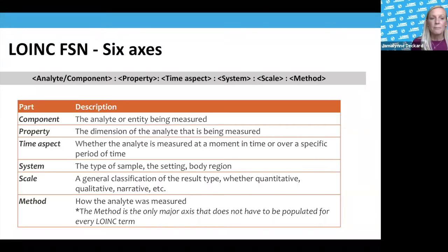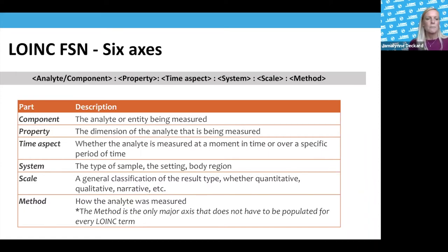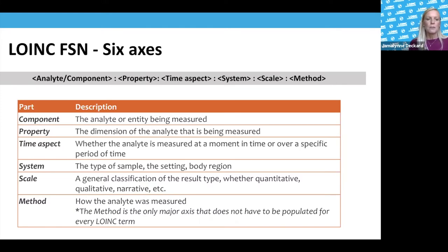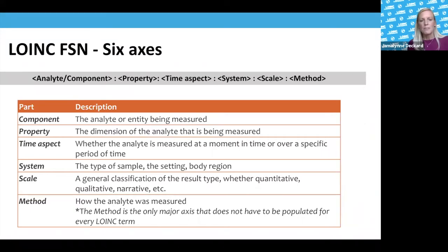Then we have the time — the timing aspect for the measurement — the system, which is the specimen or setting or body region, the scale that is a general representation of the result type, and then the method. The method is the only axis that does not have to be populated for every term; it is optional, but in some cases it's really needed, especially in certain domains where results are significantly different depending on the method used.